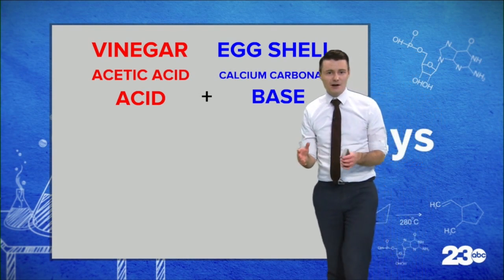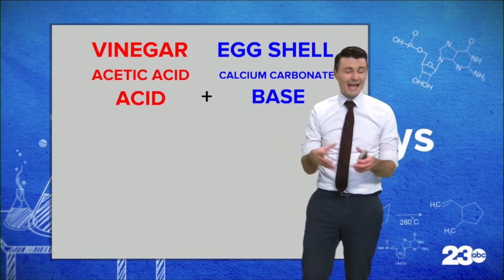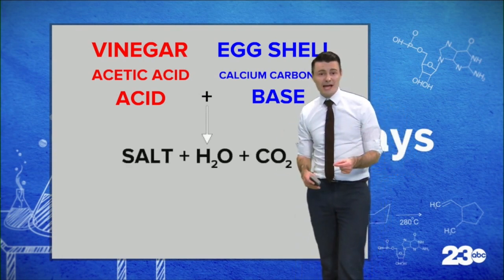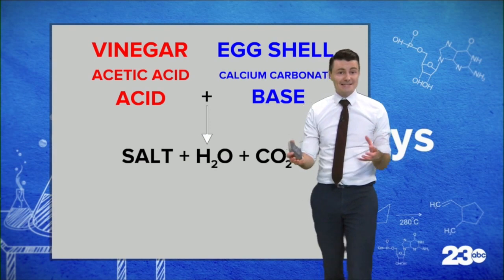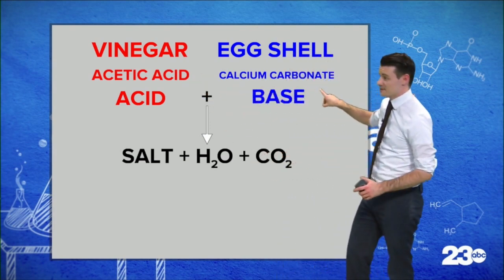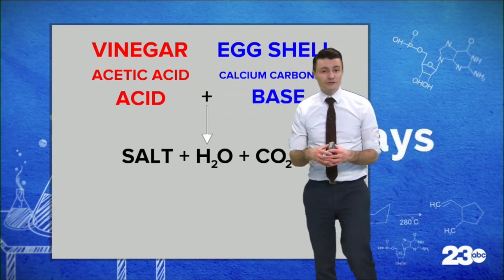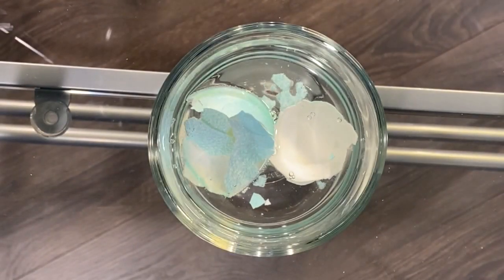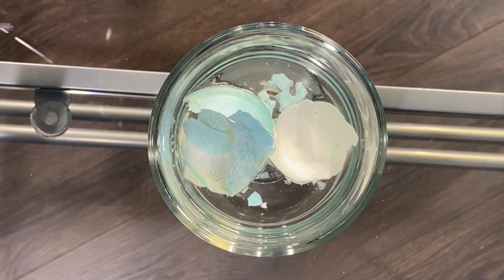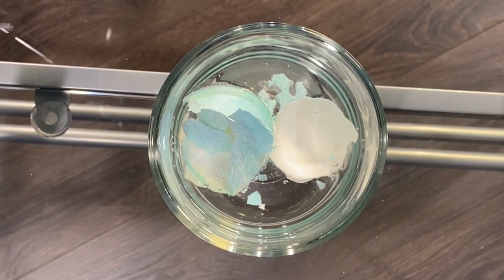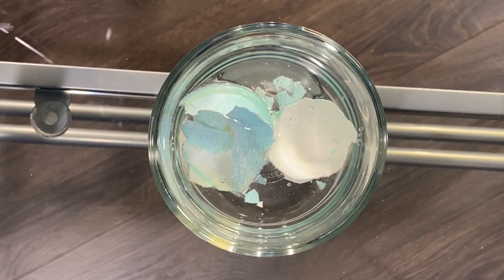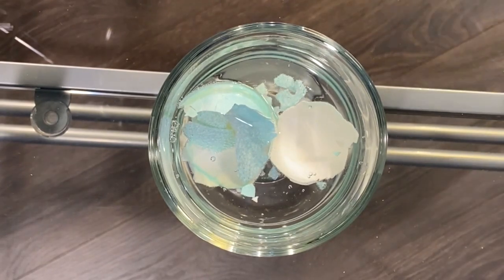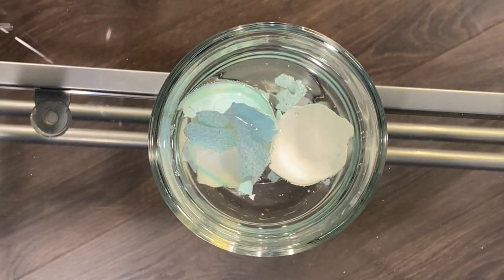Acids and bases are the opposite of each other, and when we add them together, we tend to get a chemical reaction just like we did today. The acetic acid and the calcium carbonate come together to form completely new results: a salt, H2O — better known as water — and CO2, carbon dioxide. Carbon dioxide is a gas, and that's what causes all the bubbles that you see when you add the vinegar to the eggshell.